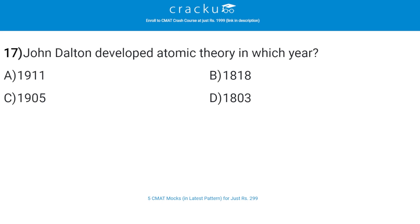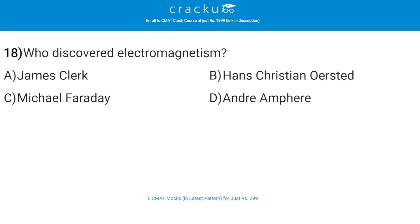John Dalton developed atomic theory in which year? The correct answer is D, 1803. Experiments with gases that first became possible at the turn of the 19th century were carried out by John Dalton.